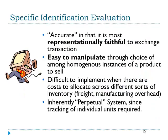Specific identification appears to be accurate in that it's the most representationally faithful way to reflect an exchange transaction. However, it's relatively easy to manipulate through the choice among homogenous instances of a product to sell. A company could deliberately pick out the lowest cost item to sell that's identical to the higher cost item sitting next to it just to earn a higher profit. It's also difficult to implement when there are costs to allocate across different types of inventory such as freight and manufacturing overhead, and it's an inherently perpetual system since tracking of individual units is required.